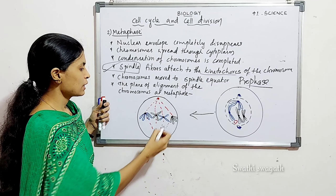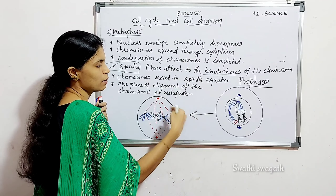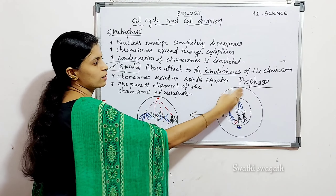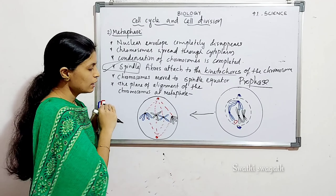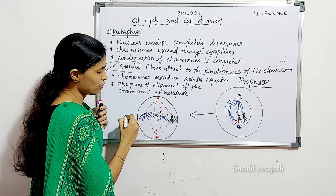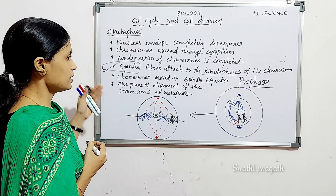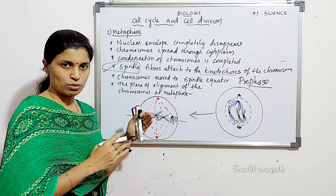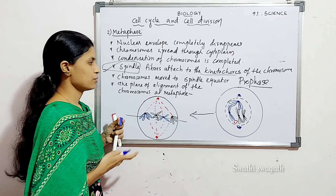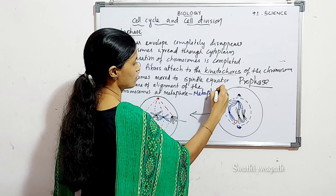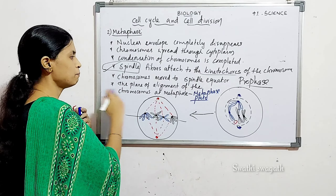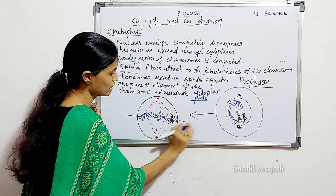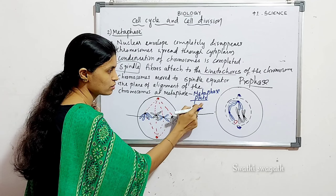The spindle fibers are attached to the kinetochore, and then chromosomes move to the spindle equator. All the chromosomes are arranged in alignment at the spindle equator. This arrangement is called the metaphase plate — a very important term. The metaphase plate is the plane of alignment of all chromosomes at the equator during metaphase.